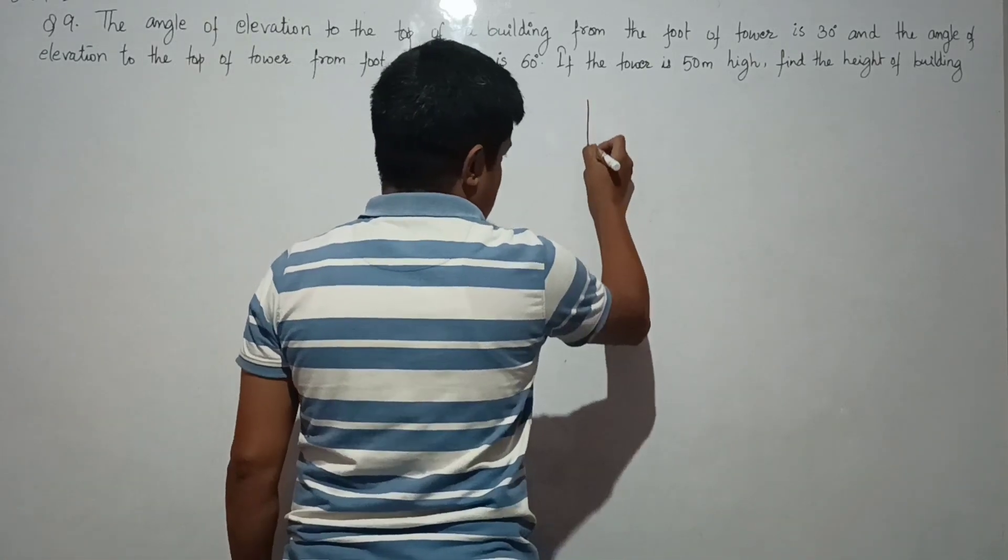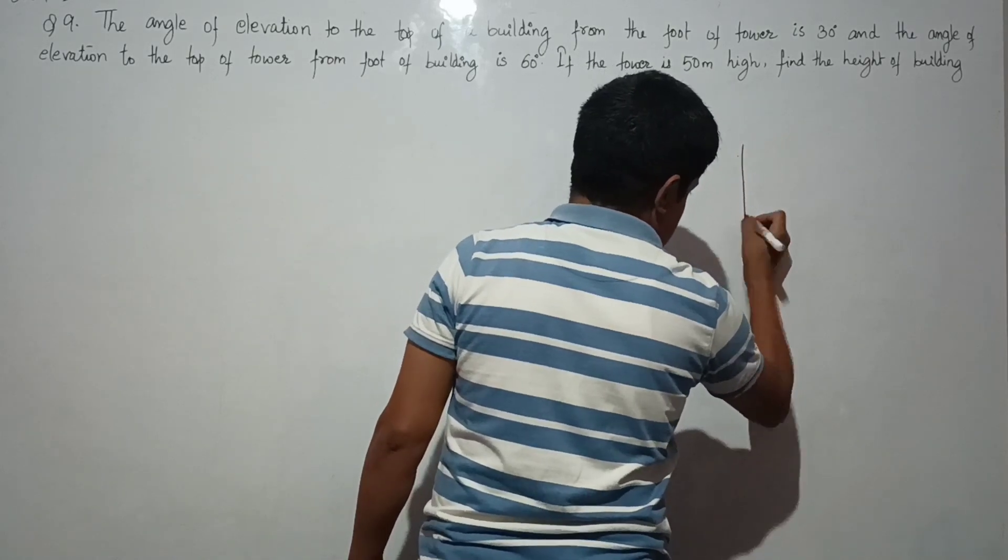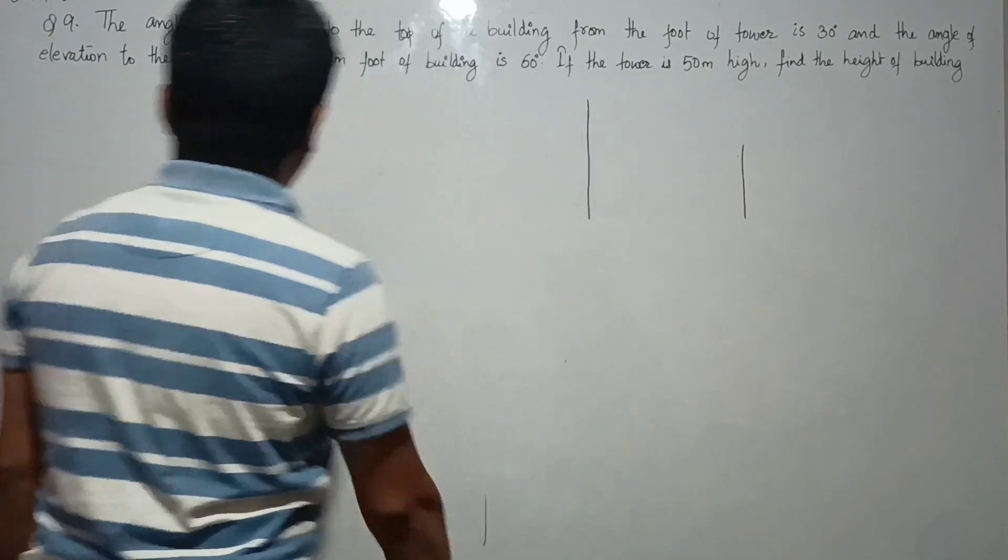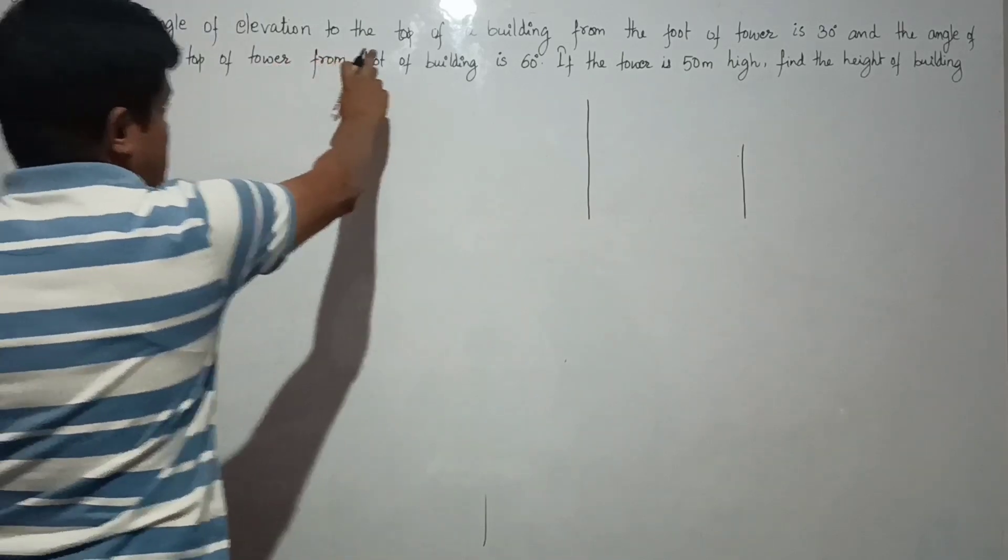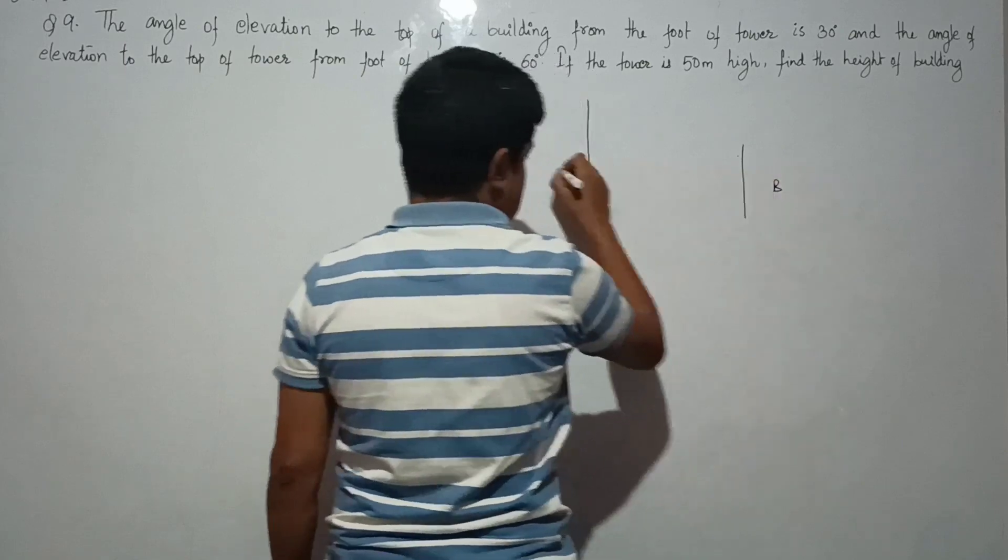So let us make the tower which is a little bigger than the building. The angle of elevation to the top of building—so this is the building and this is the tower.